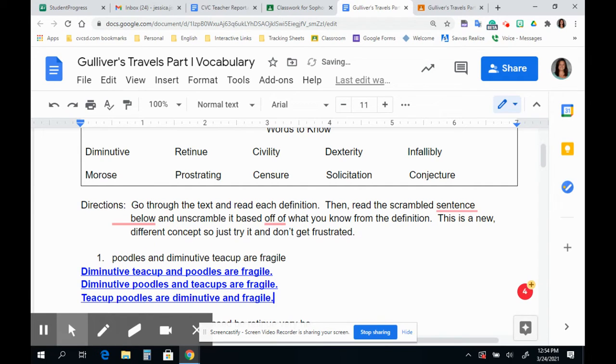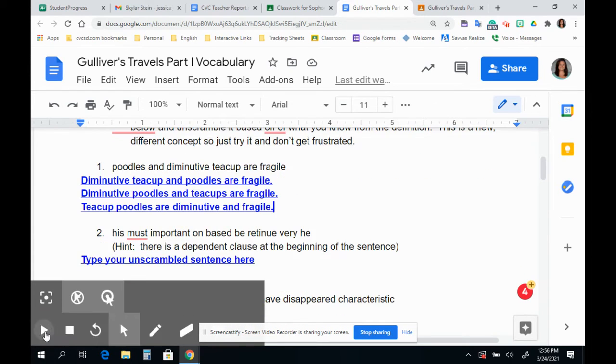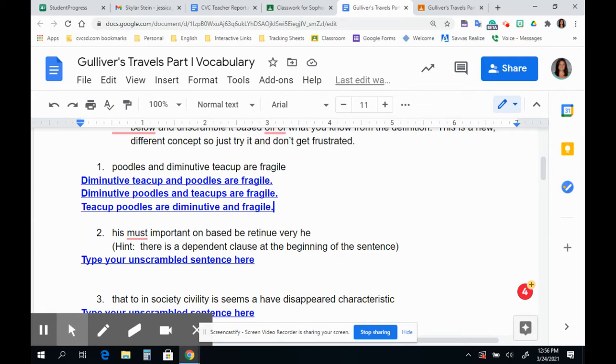Notice I'm capitalizing my first letter, and I am putting a period at the end. The option that I actually had created this sentence for would be teacup poodles are diminutive and fragile. So teacup poodles, it was brought to my attention earlier today that some people don't know what teacup poodles are. Teacup poodles are kind of like toy poodles, so they're very tiny. So that's where the diminutive and fragile comes in. So now that we've done this first one, we've kind of walked through how to set up this sentence.